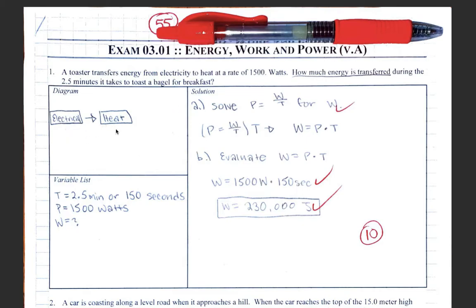In problem number one, some sort of diagram showing electrical energy is converted to heat energy is fine. You can draw a toaster. In the variable list, the time is 2.5 minutes, which this person converted to 150 seconds in the variable list. That's appropriate. And the 1500 watts is the power.